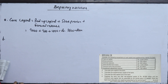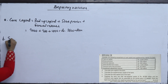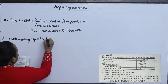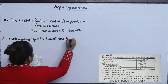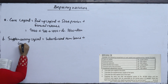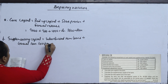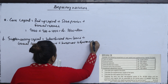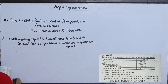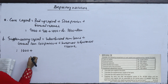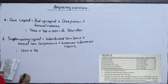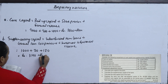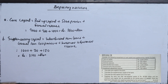The second requirement is to calculate the supplementary capital of the bank. Supplementary capital equals subordinated term loans plus general loan loss provisions plus investment adjustment reserve. Subordinated term loan is 1000 million, general loan loss provision is 20 million, investment adjustment reserve is 120 million, giving supplementary capital of 1140 million. Core capital is 2600 million.